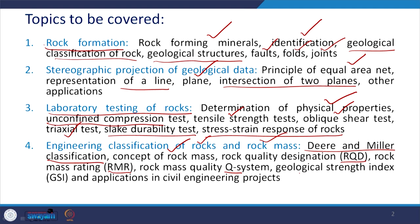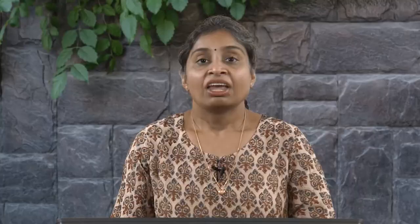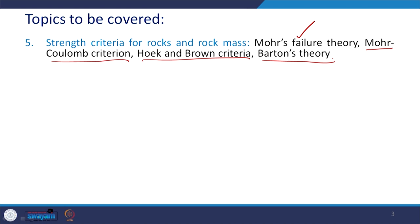We will see the applications of these classification systems in various civil engineering projects. Then we will learn about strength criteria for rocks and rock masses, including the Mohr failure theory, Mohr-Coulomb criterion, Hoek and Brown criteria, and finally Barton's theory for jointed rocks.